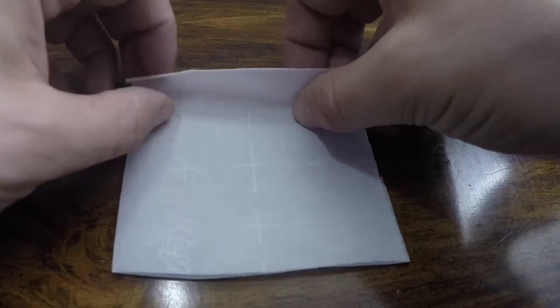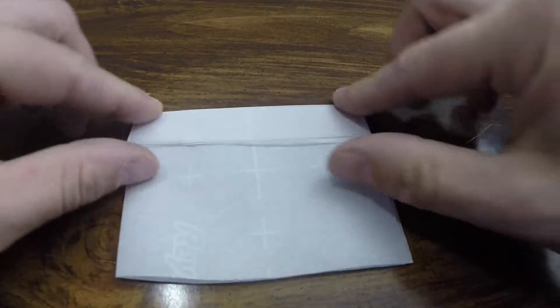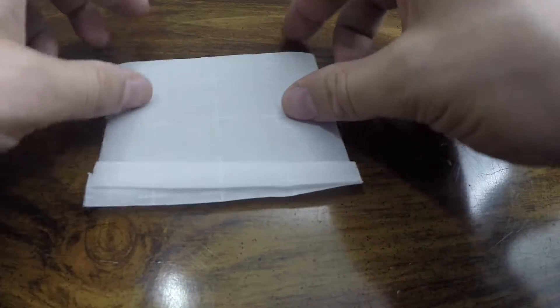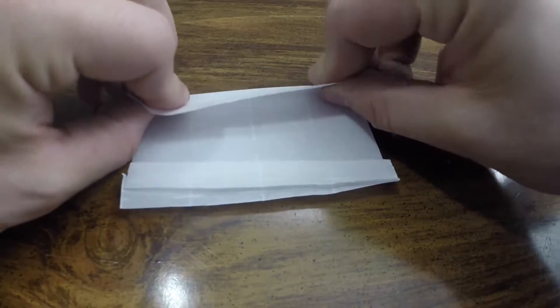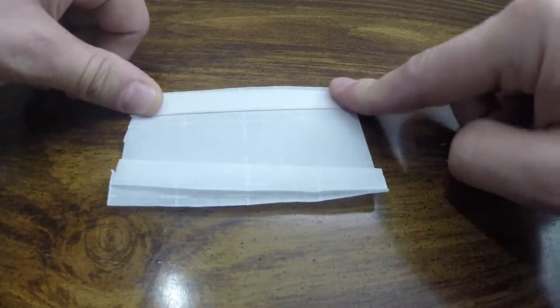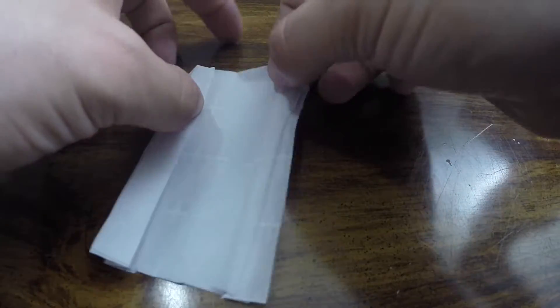We'll start by folding this end, and then folding it back with an accordion fold. Then we'll spin it around and do the same to the other side. We'll also fold the back end in a similar fashion.